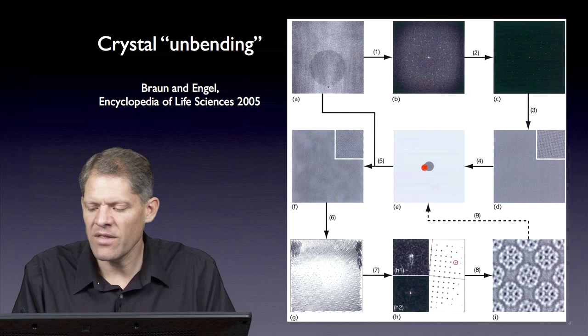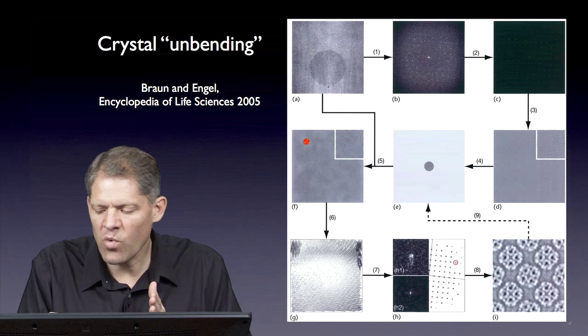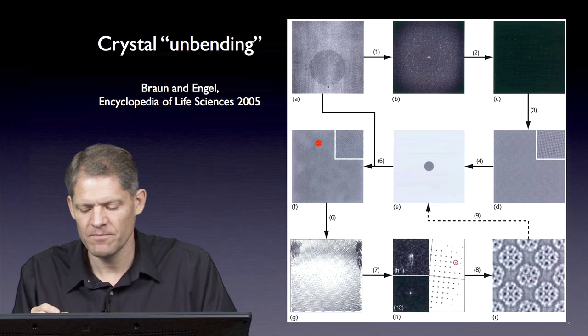If we cut a small part of that out as a reference, we can then cross correlate that reference against the entire original image of the crystal. The cross correlation map shows where in the original image unit cells appear.